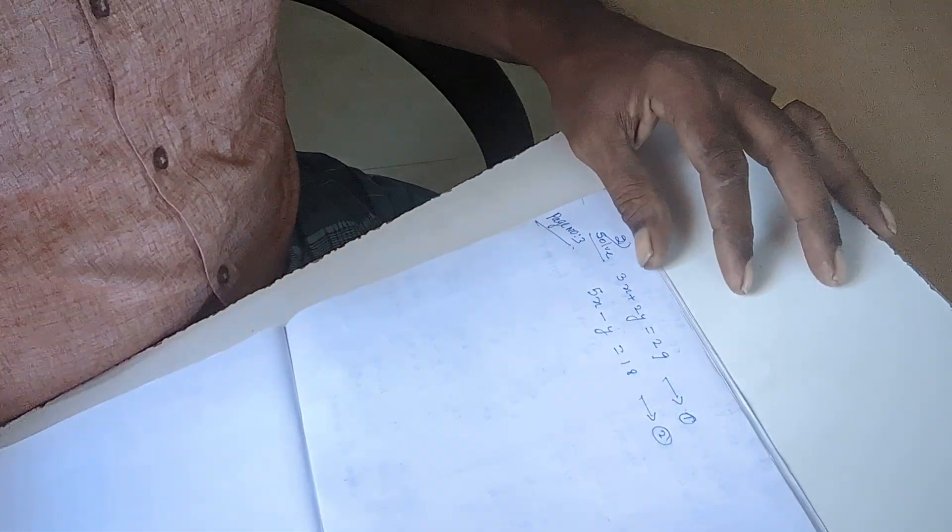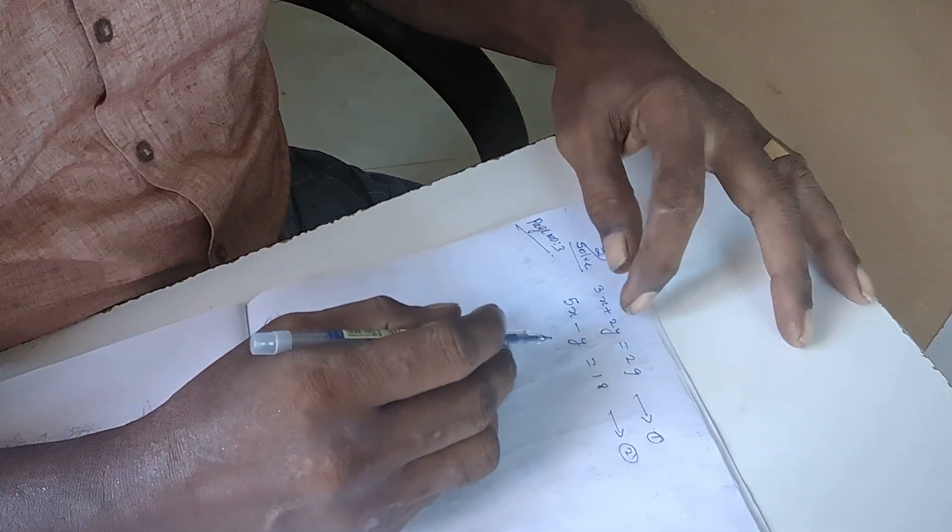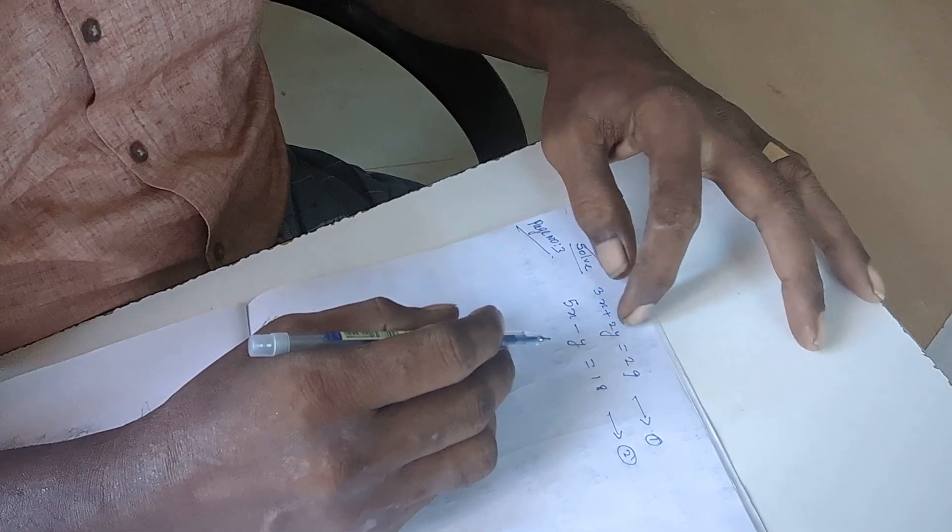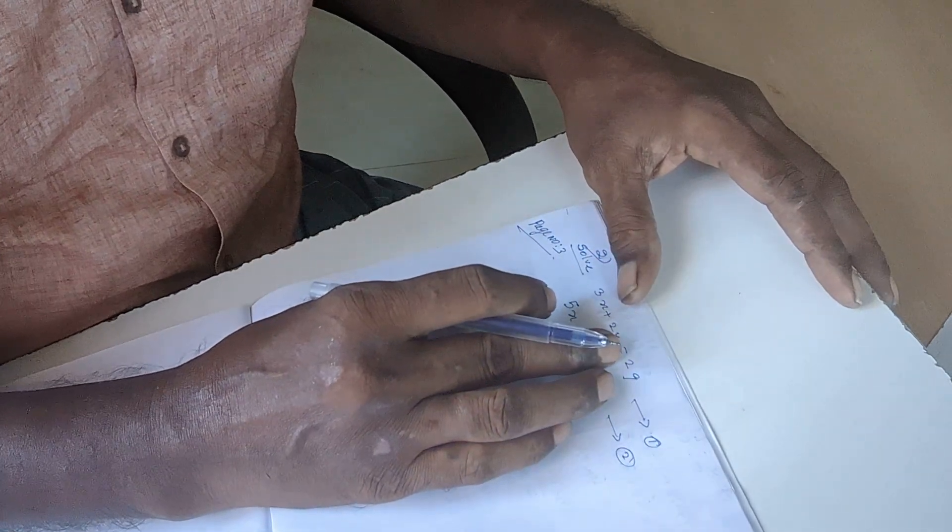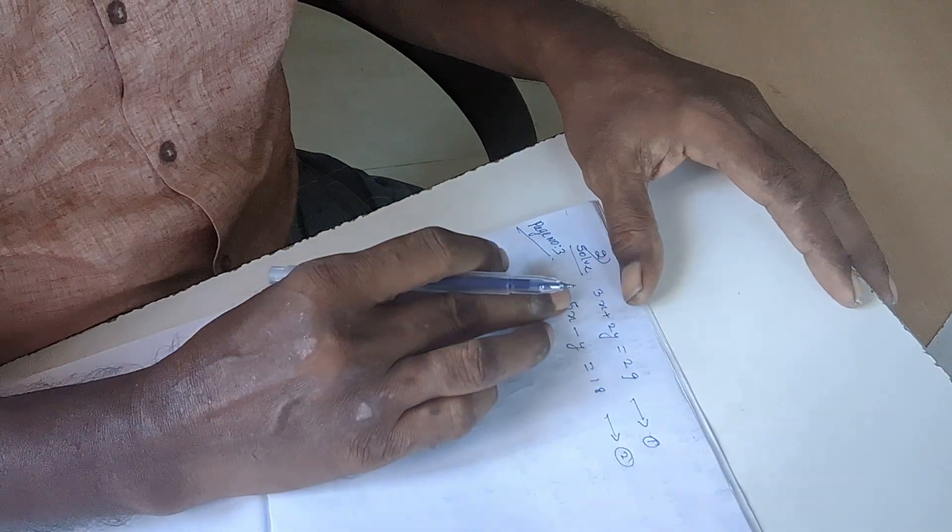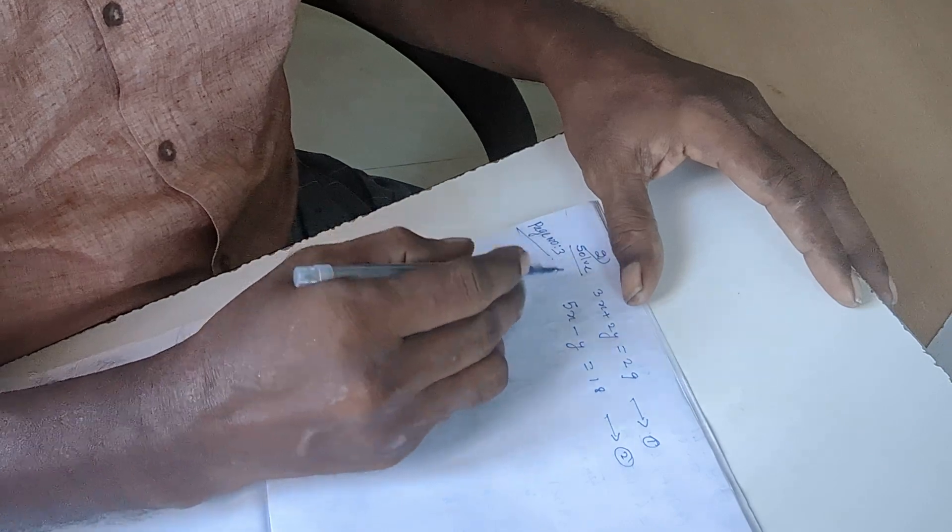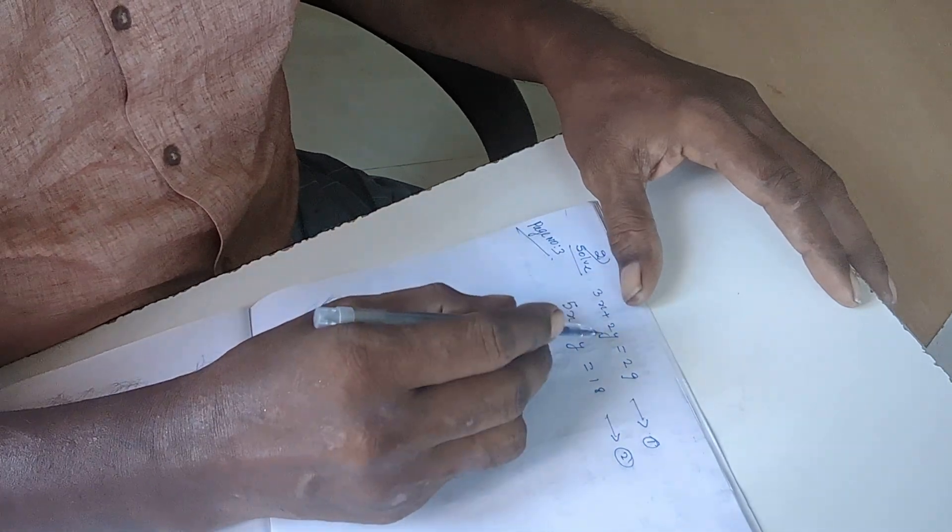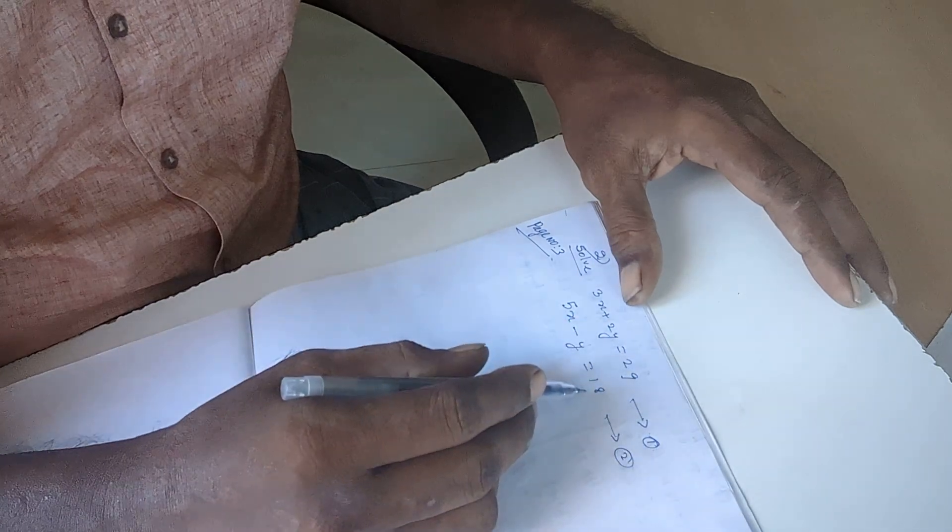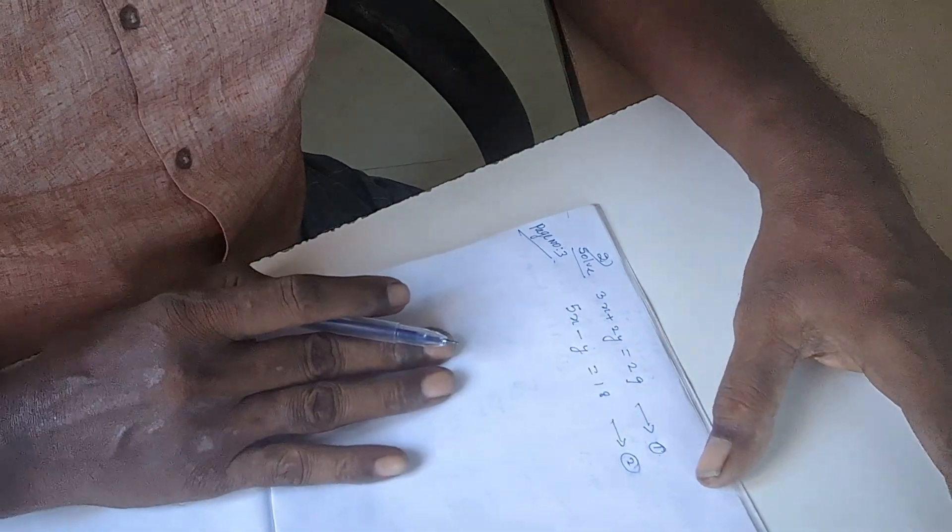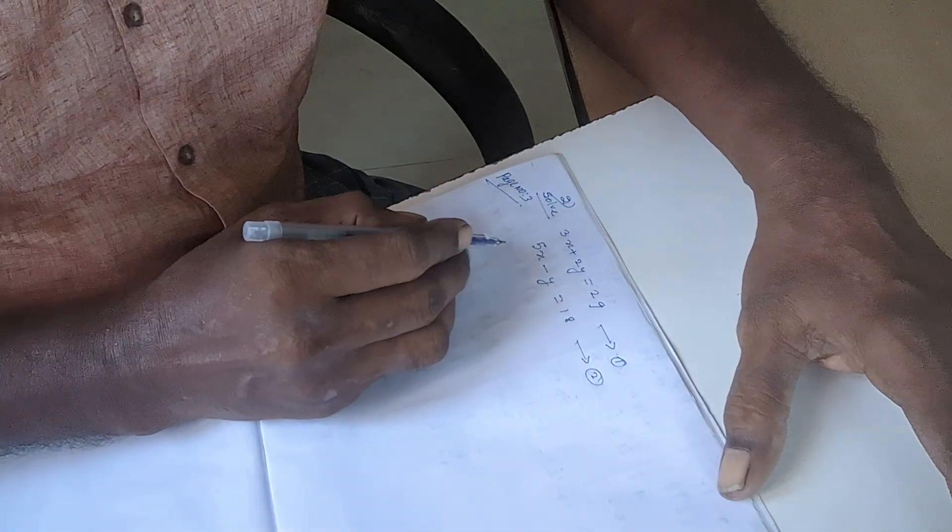Good morning friends. Now we solve the linear equations with two variables x and y. This sum is from Maharashtra State Board 10th standard book, first chapter. The sum is found in page number three. Three x plus two y equals twenty-nine, equation number one. Five x minus y equals eighteen, that is equation number two.